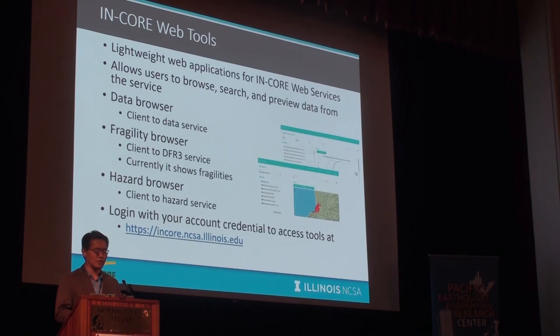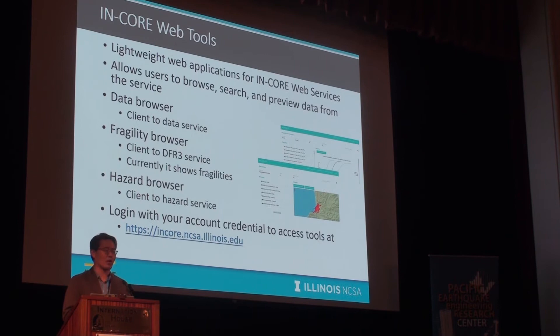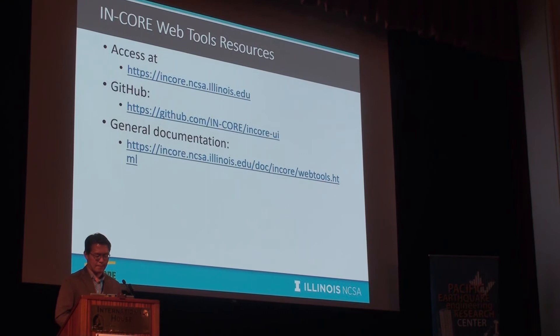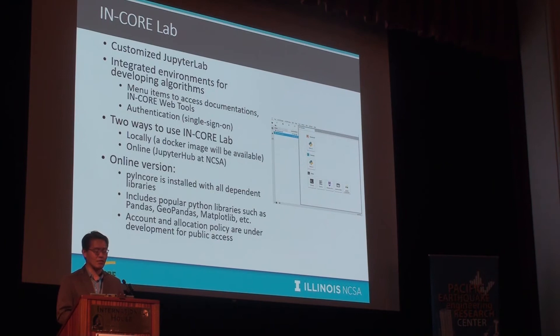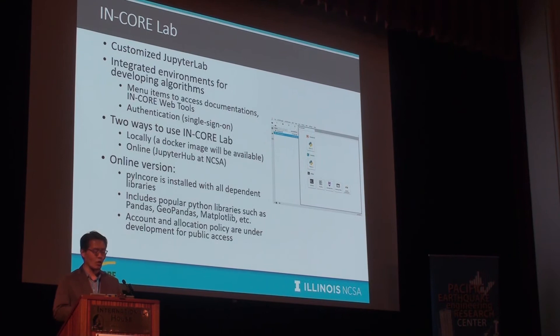The web tools are lightweight web applications where you can browse data, fragility curves, and hazards. We are currently expanding the fragility browser into DFR3 services, so you'll be able to navigate repair curves, restoration curves, and other curves as well. Our last component is InCorelab — some of you heard about Jupyter Notebook today, but the Jupyter community has come up with a next version called JupyterLab, with a much better user interface that handles different kinds of resources. We customized JupyterLab to connect to our services and documentation. You can run InCorelab locally or access NCSA's online version through JupyterHub.